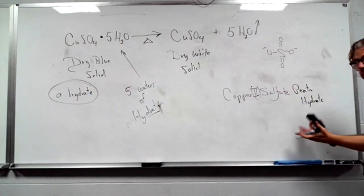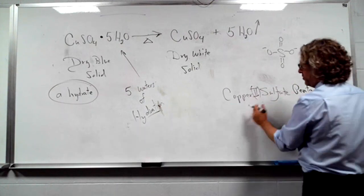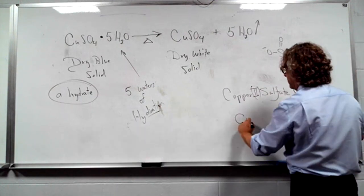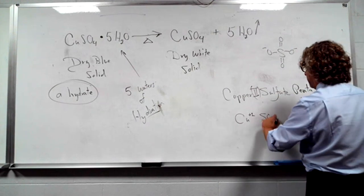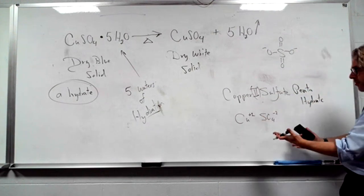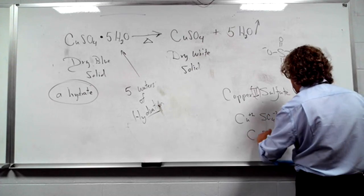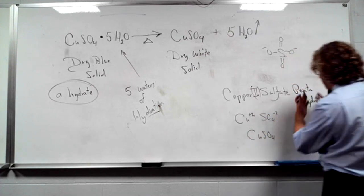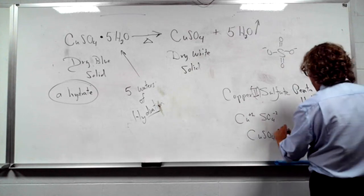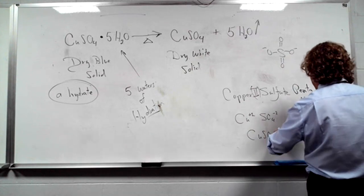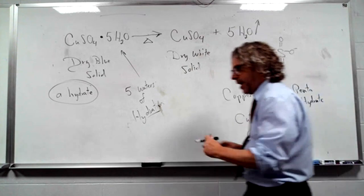If I said write the formula of copper(II) sulfate pentahydrate — copper(II) is Cu+2, sulfate is SO4 minus 2. You can cross them down, but they balance each other, so you write CuSO4. And then for pentahydrate — 5, like the pentagon — 5 waters: dot 5H2O. So that takes care of hydrates.